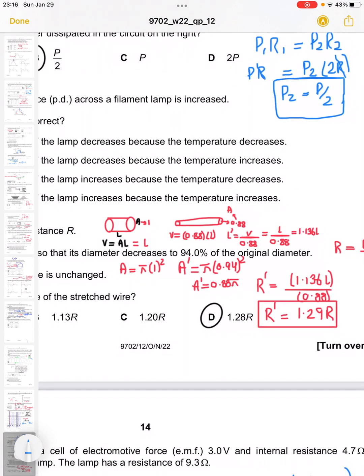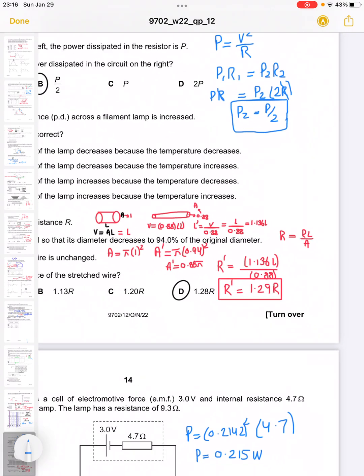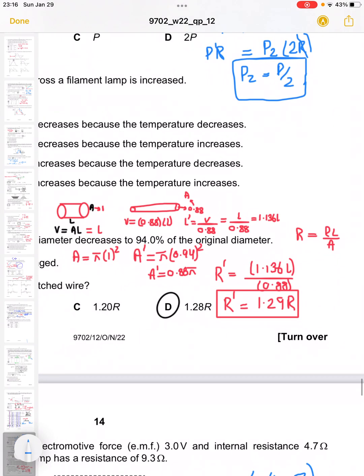If the diameter is decreased to 88%, the volume becomes 0.88 L, and L dash becomes V over 0.88, which is L over 0.88 or 1.136 L. Resistance is rho L over A. Just plug in the values and you will find the answer 1.28 or 1.29.